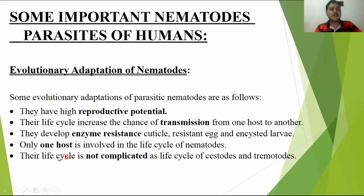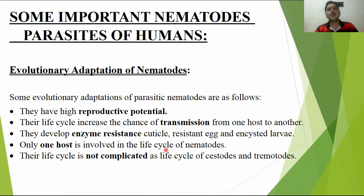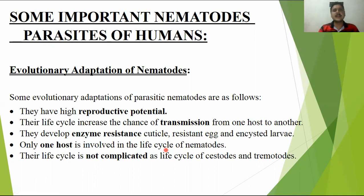The third evolutionary adaptation is that only one host is involved in the life cycle of nematodes. Mostly, you can see there is one host, though in some cases there may be a major host as well.